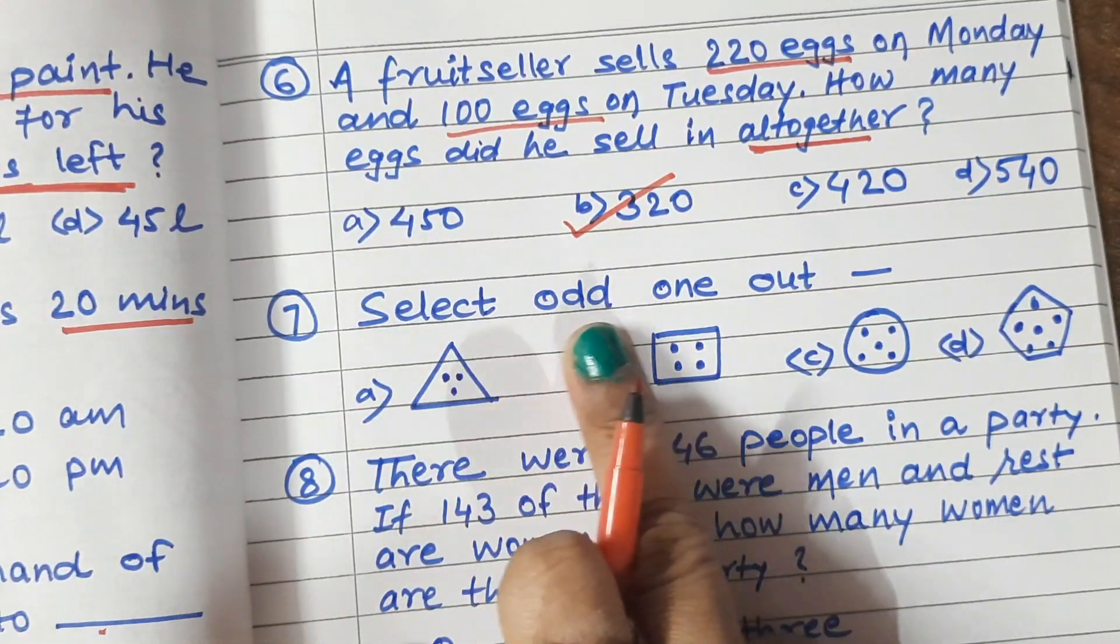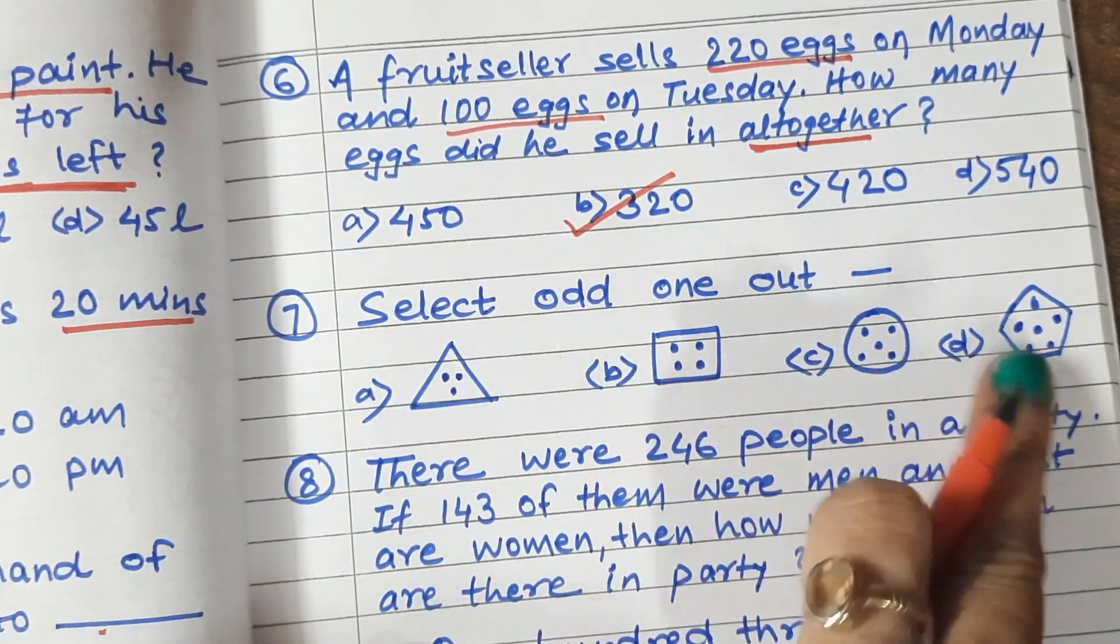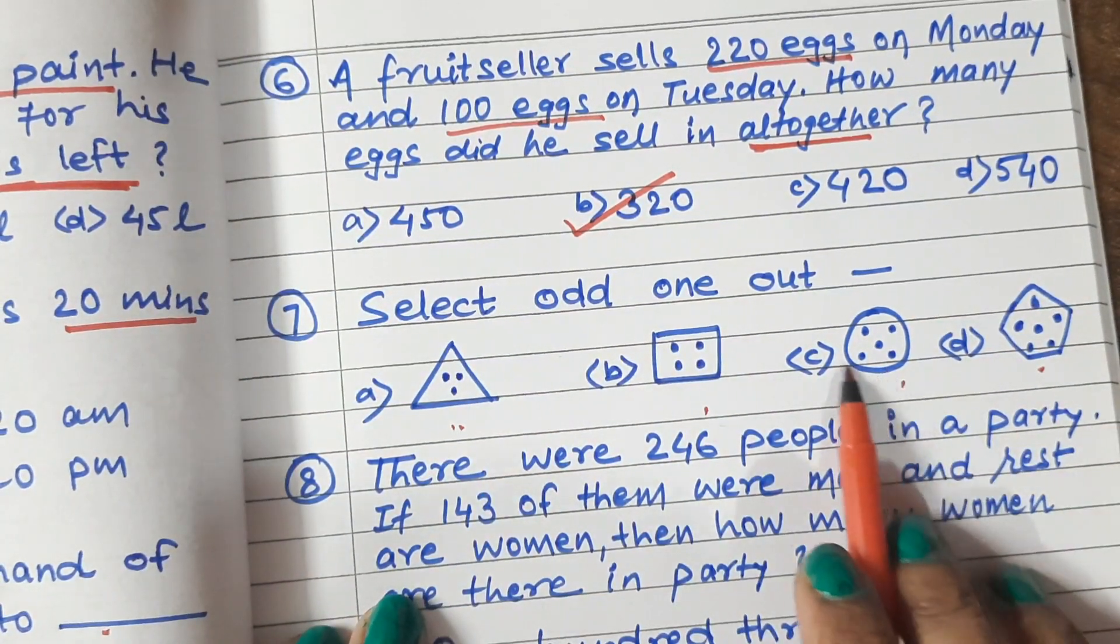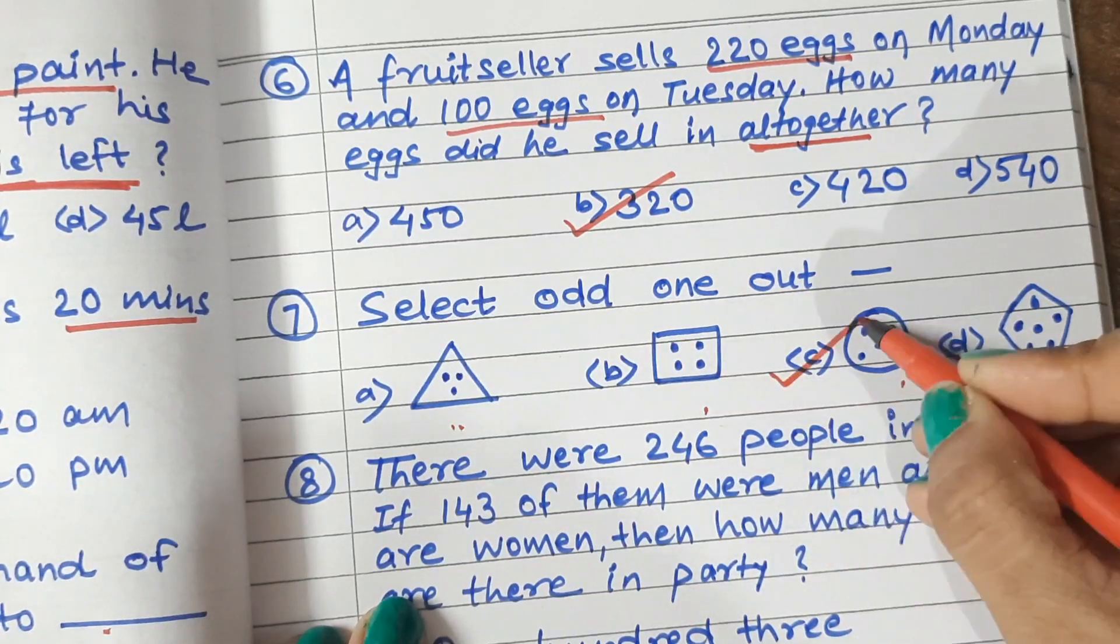Question 7: Select odd one out. Now look at these figures. Now pick the odd one out. So here there are all line shapes. Except the circle is curved. So the circle is odd.